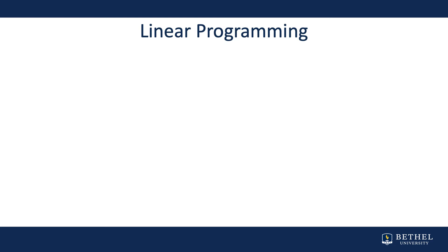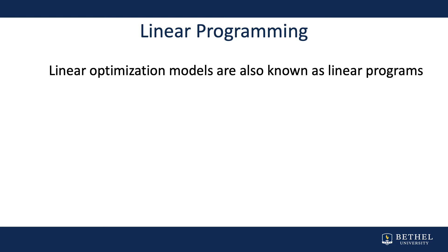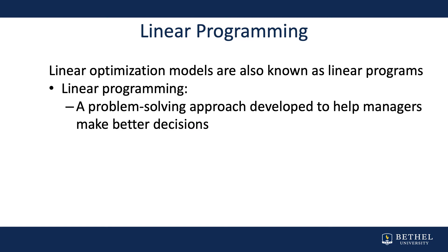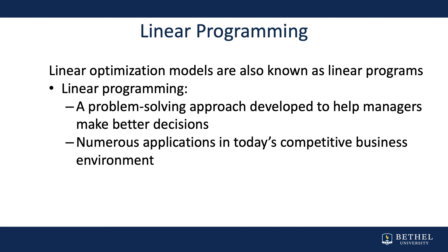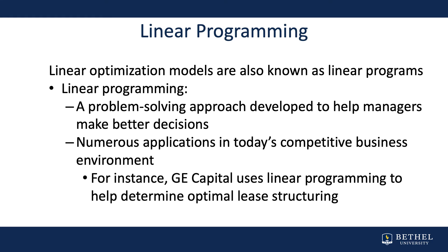Now let's talk about linear programming. Linear optimization models are also known as linear programs. Linear programming is a problem-solving approach developed to help managers make better decisions. There are several applications; one example is when GE Capital uses linear programming to help determine optimal lease structures for capital purchases. We'll look at two types of problems: the maximization problem and the minimization problem, starting with the maximization problem.